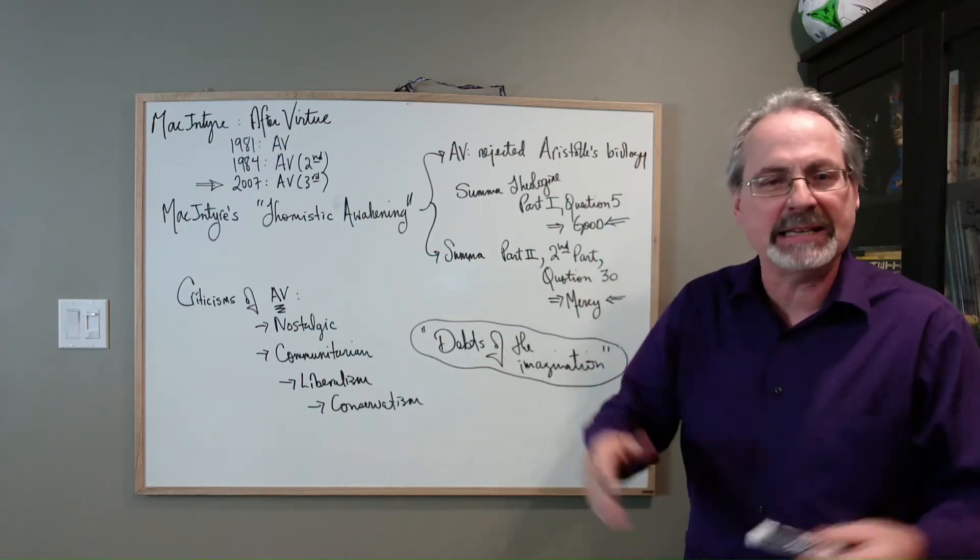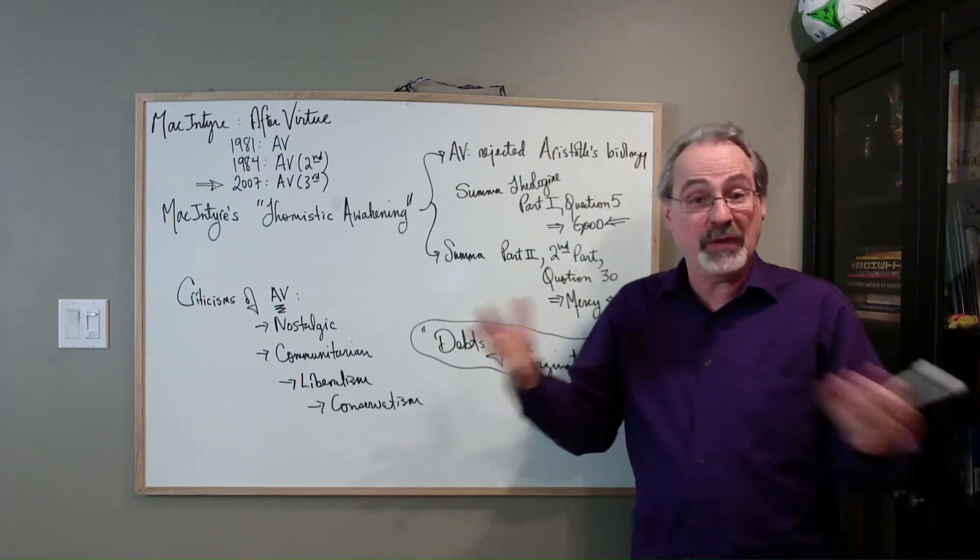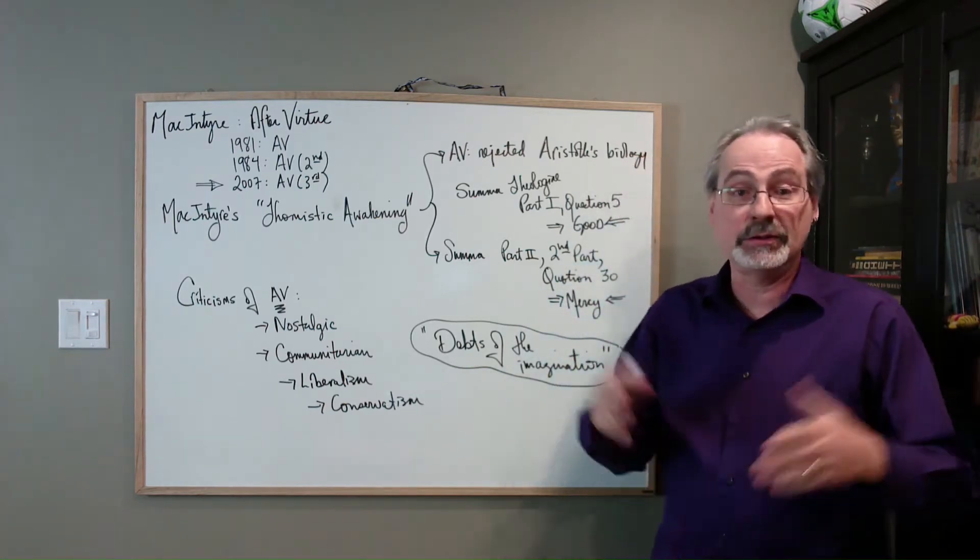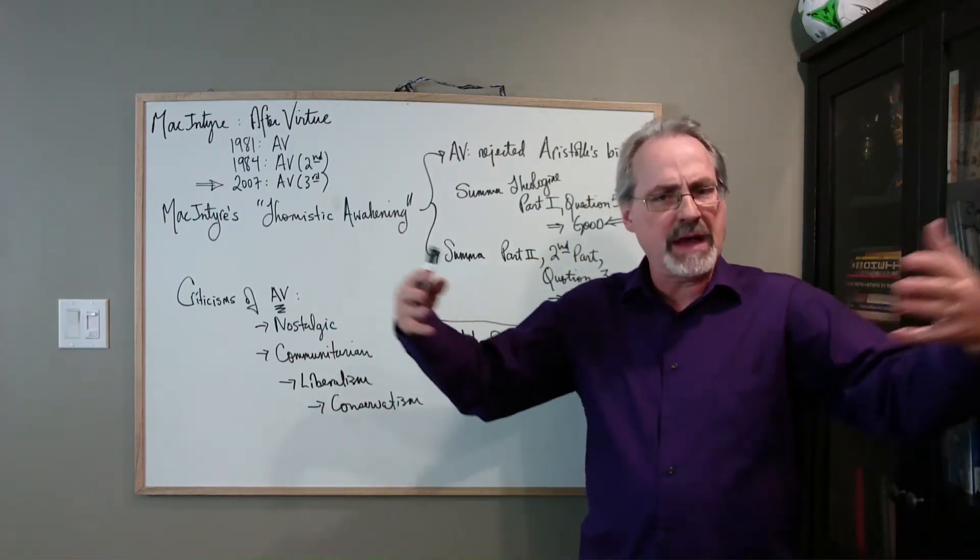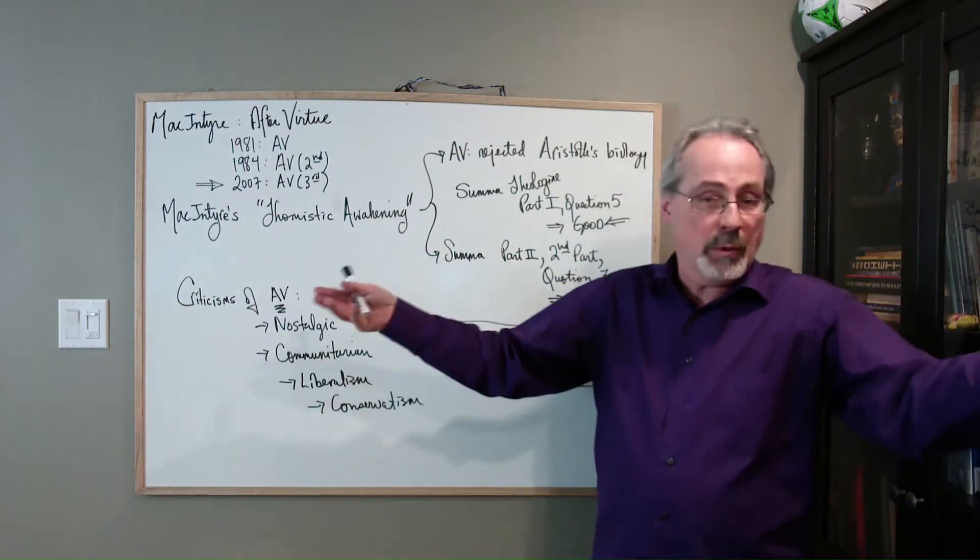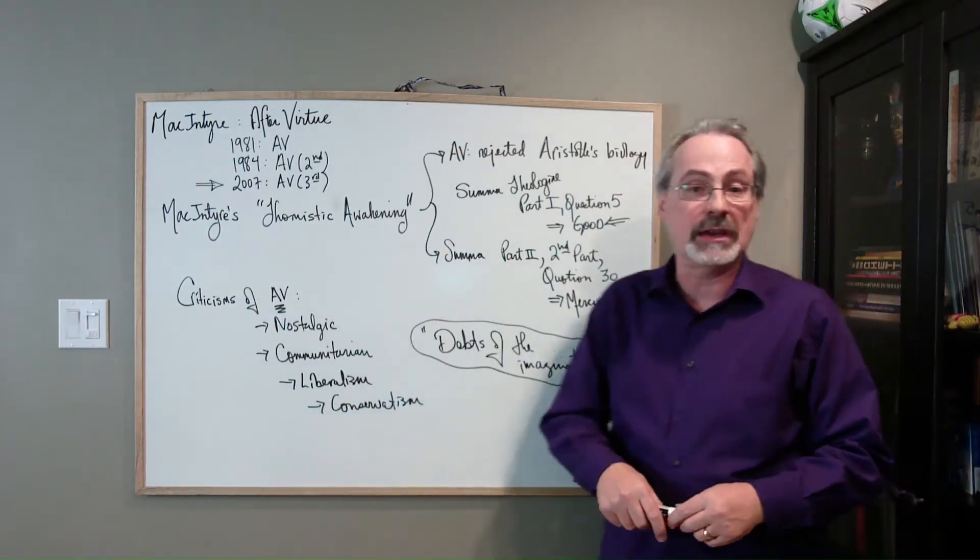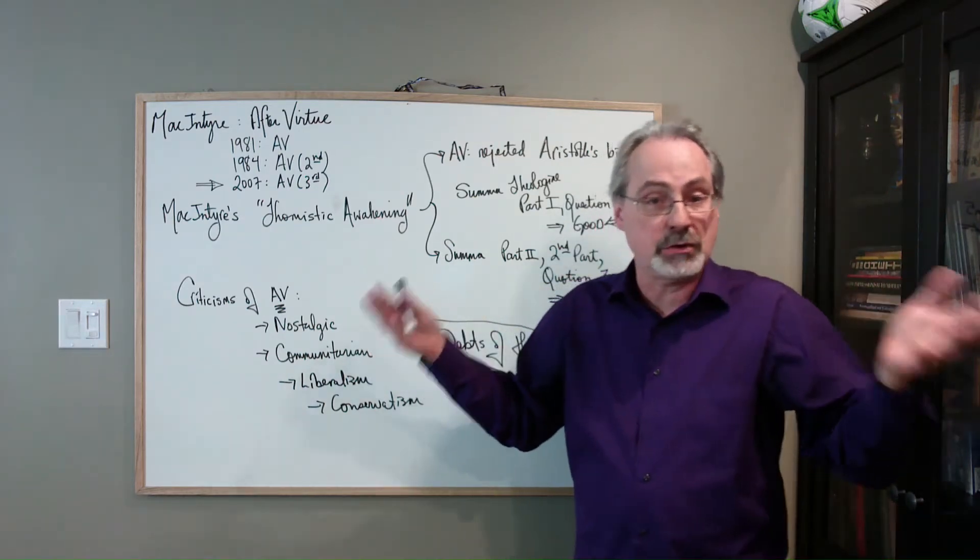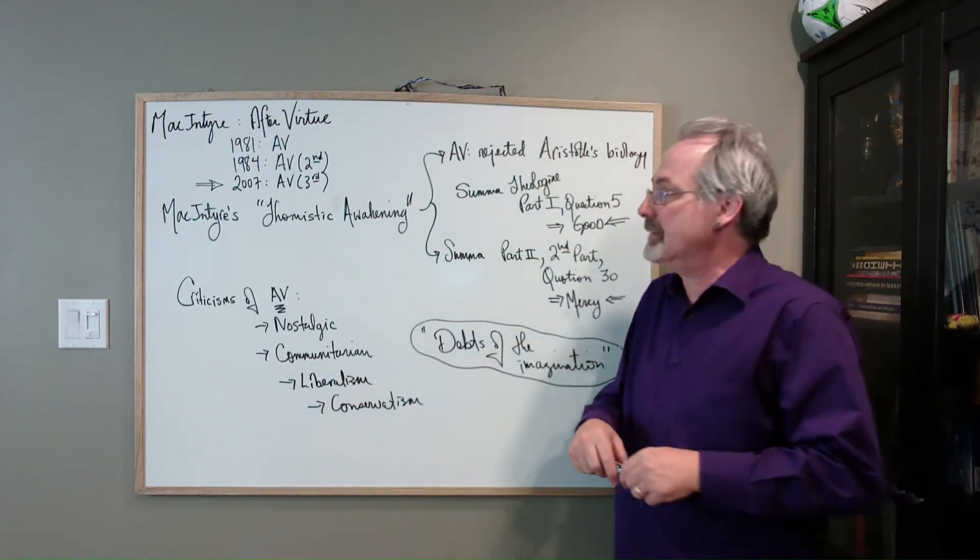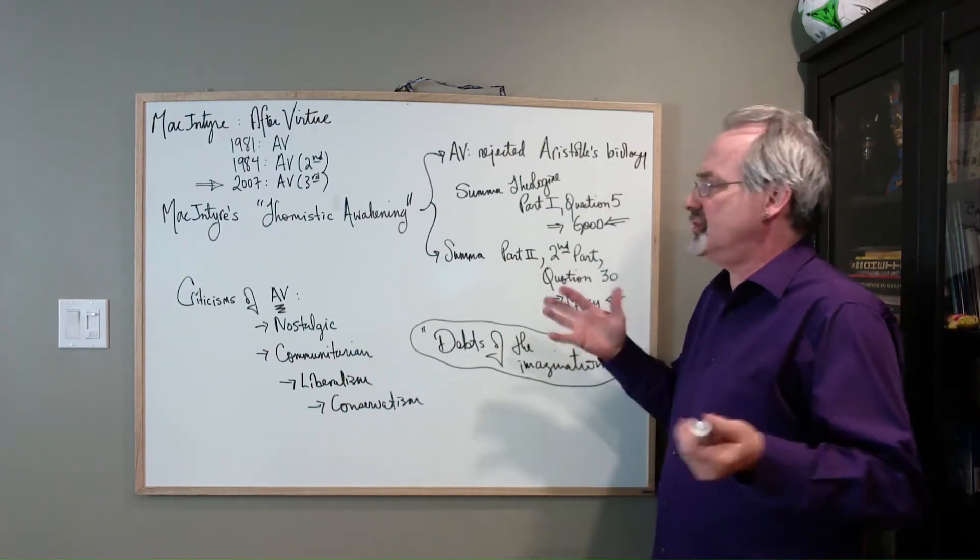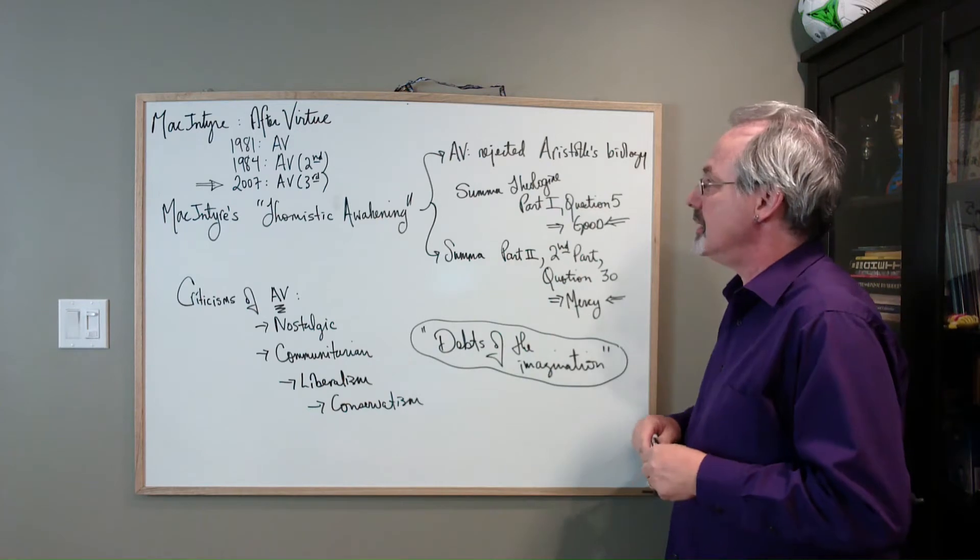Aquinas is present in the original After Virtue, but MacIntyre started thinking more and sometimes refers to himself as a Thomist of sorts. What did he find in Thomas Aquinas? Very traditional stuff going back to Aristotle and Aquinas, part of this vast metaphysical framework that was lost in the birth of the scientific revolution.